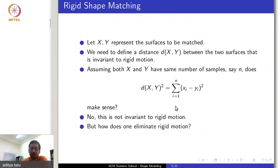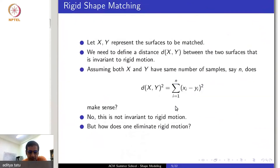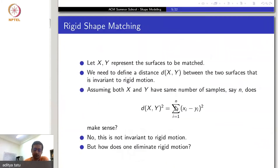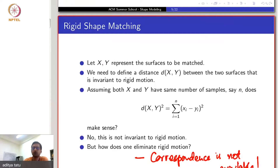How does one eliminate rigid motion? That's the question, and the added complication is that correspondence information is missing. So you have two problems: correspondence and rigid motion.